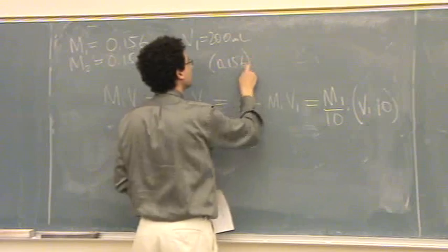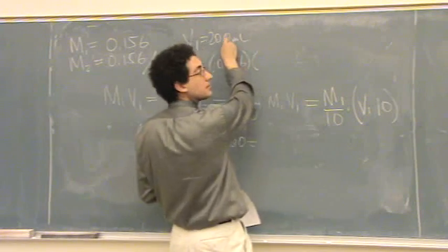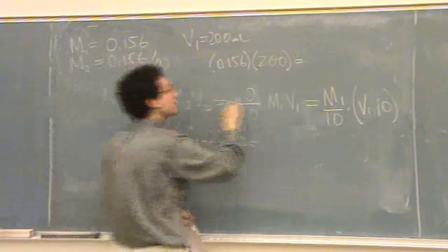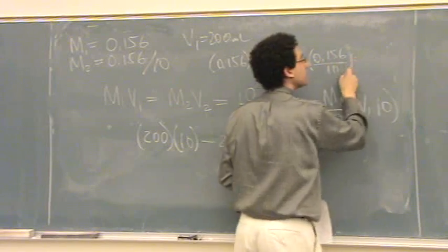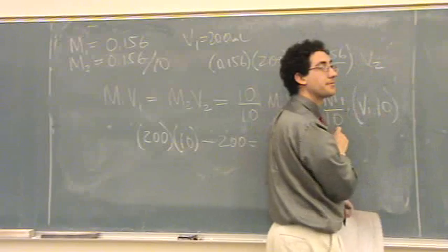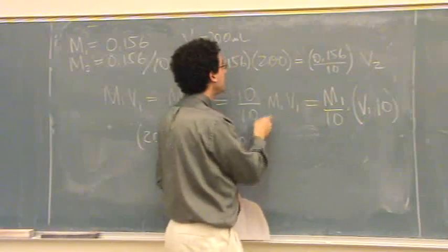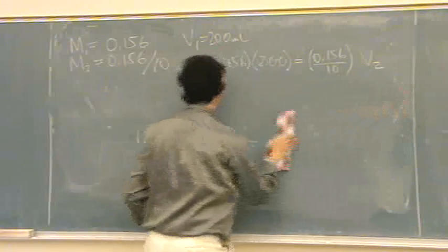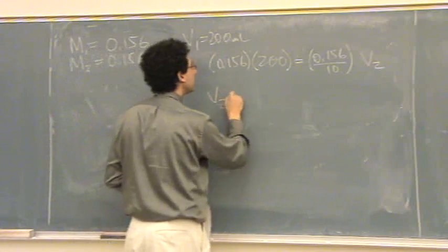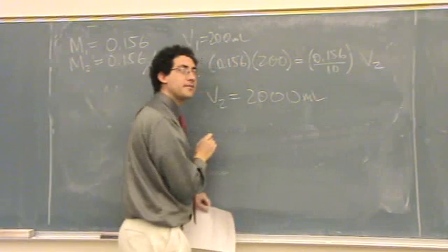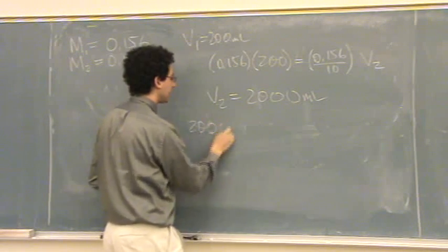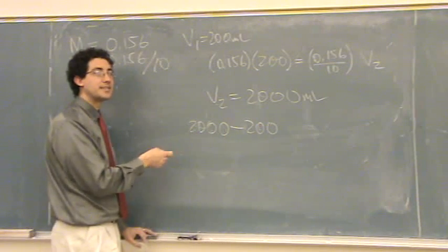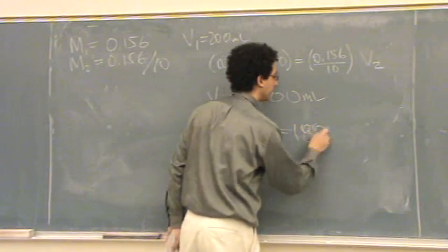0.156, M1, times V1, 200, equals M2, 0.156 divided by 10, times V2, the unknown final volume. You could do it that way too. Multiply it out, and it's going to be 200 times 10. So you'll get V2 equals 2,000. And then you'd go 2,000 minus 200, meaning you started with 200, you ended with 2,000. What's the difference is how you add probably 1,800 milliliters.